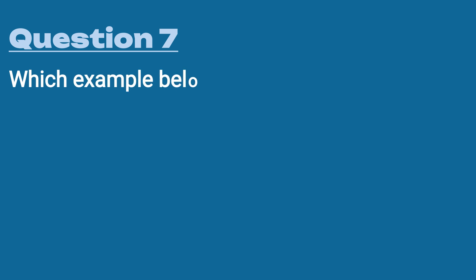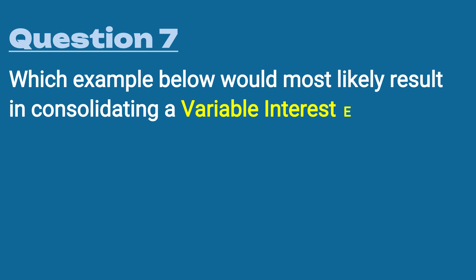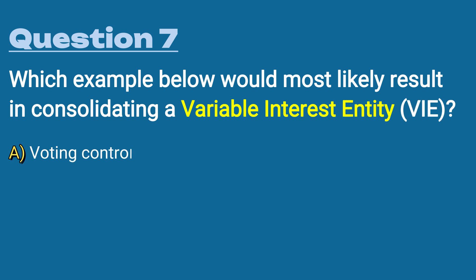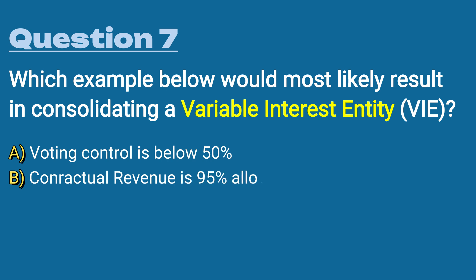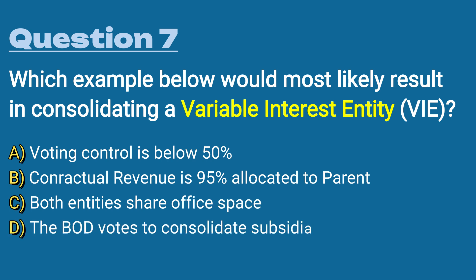Question number seven: which example below would most likely result in consolidating a variable interest entity, a VIE? A) the voting control is below 50%, B) contractual revenue is 95% allocated to the parent, C) both entities share office space, or D) the board of directors votes to consolidate the subsidiary.